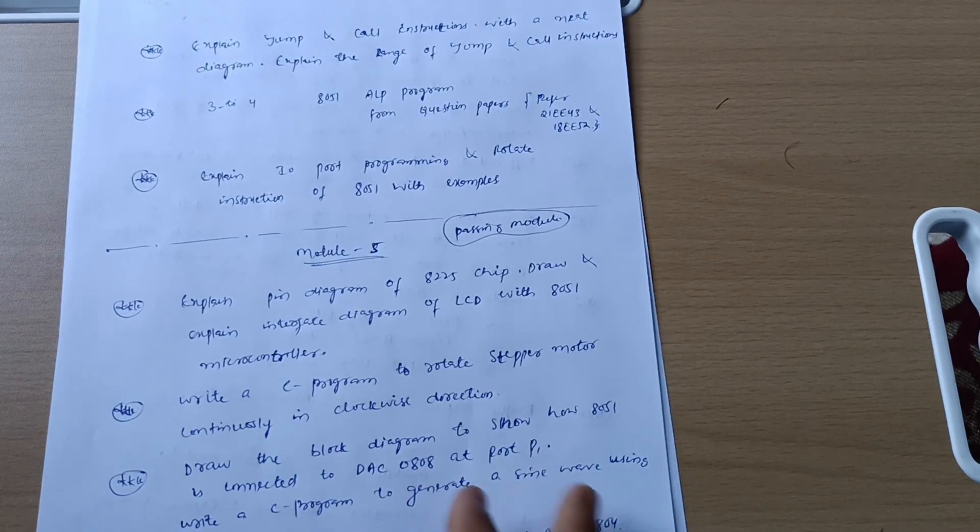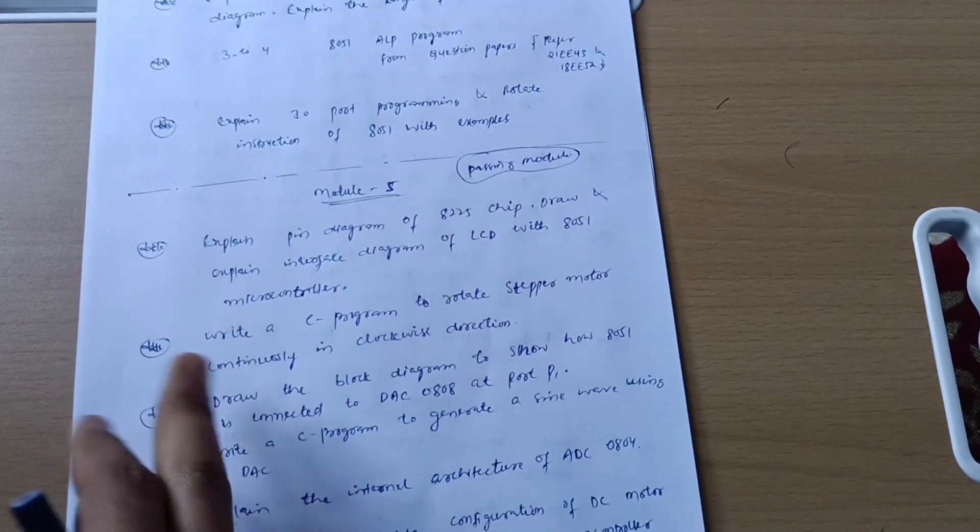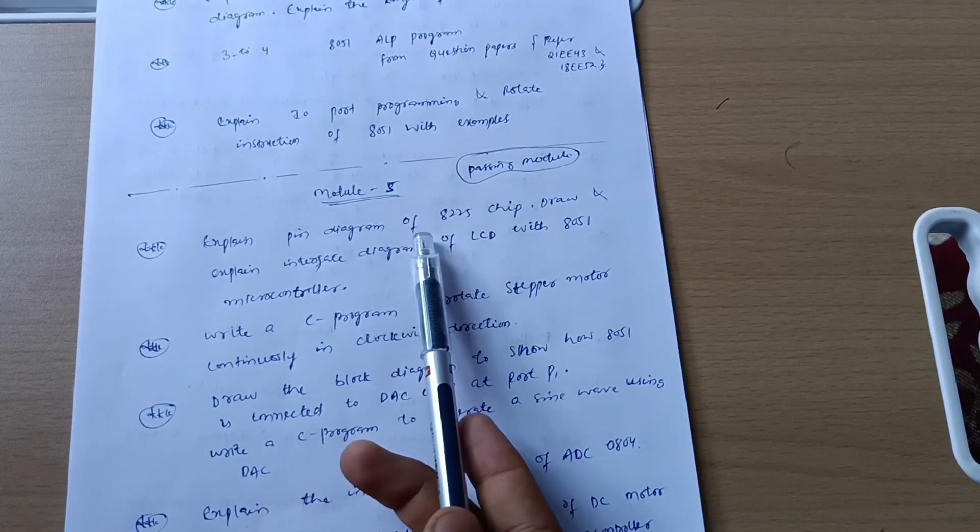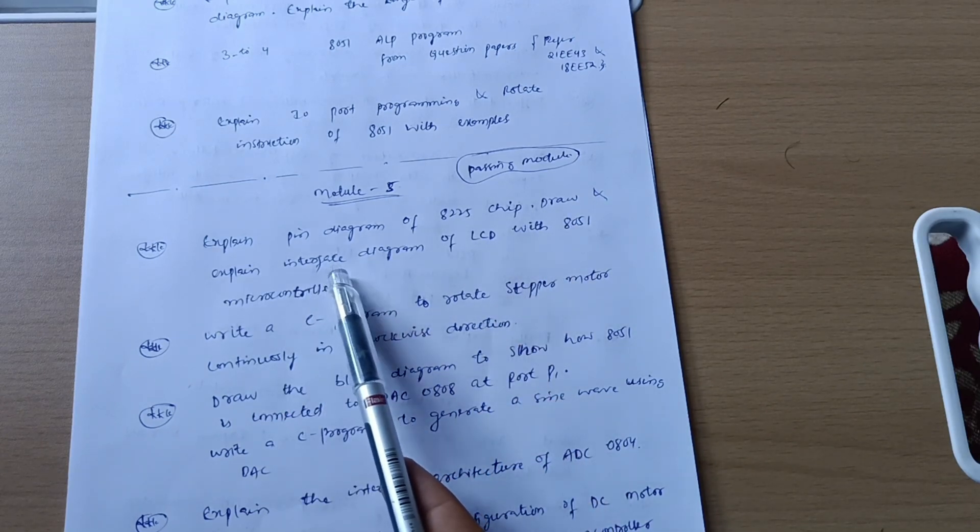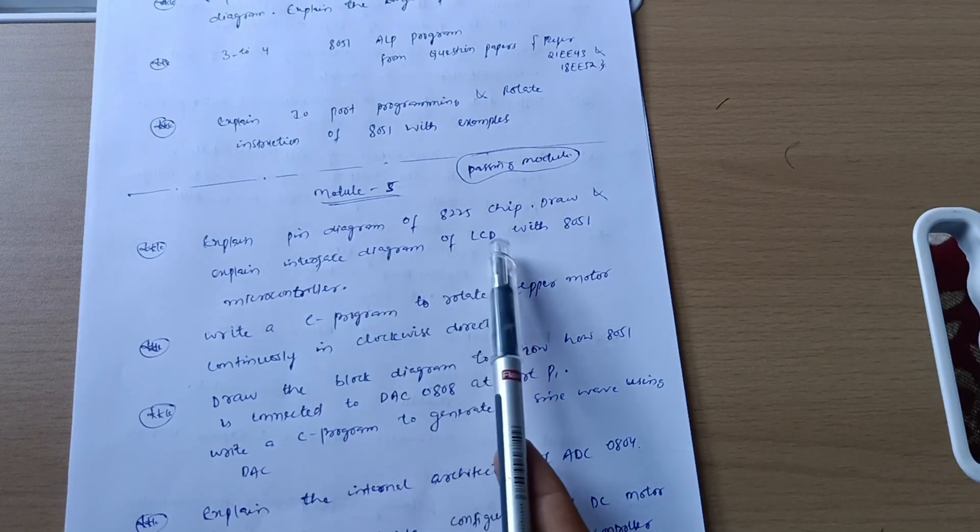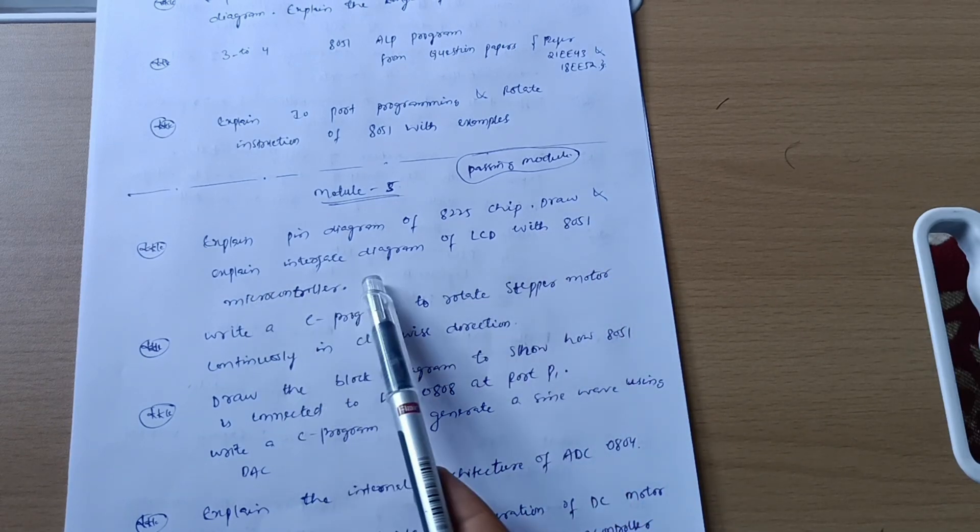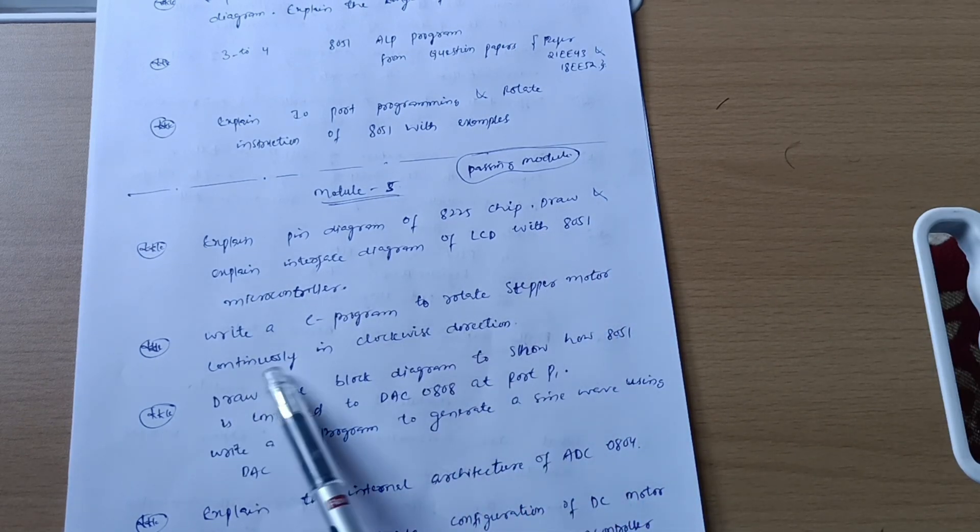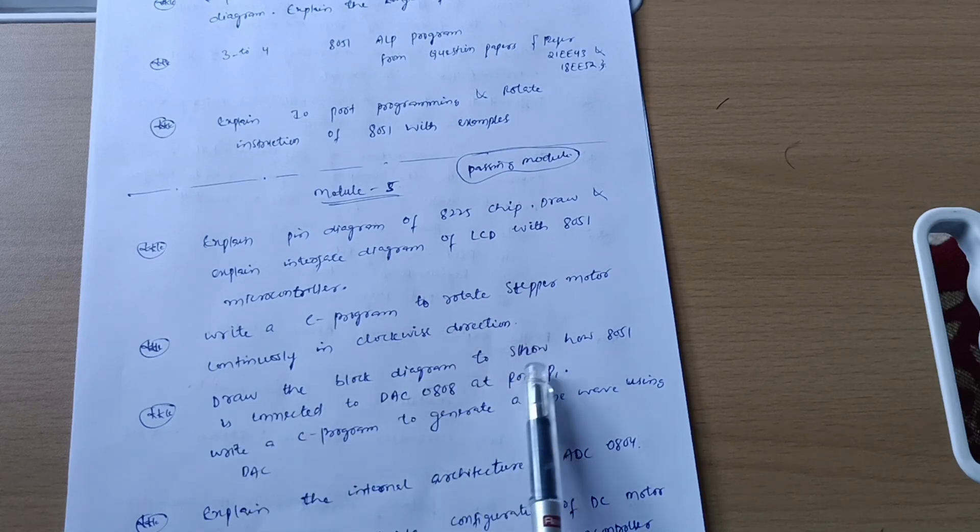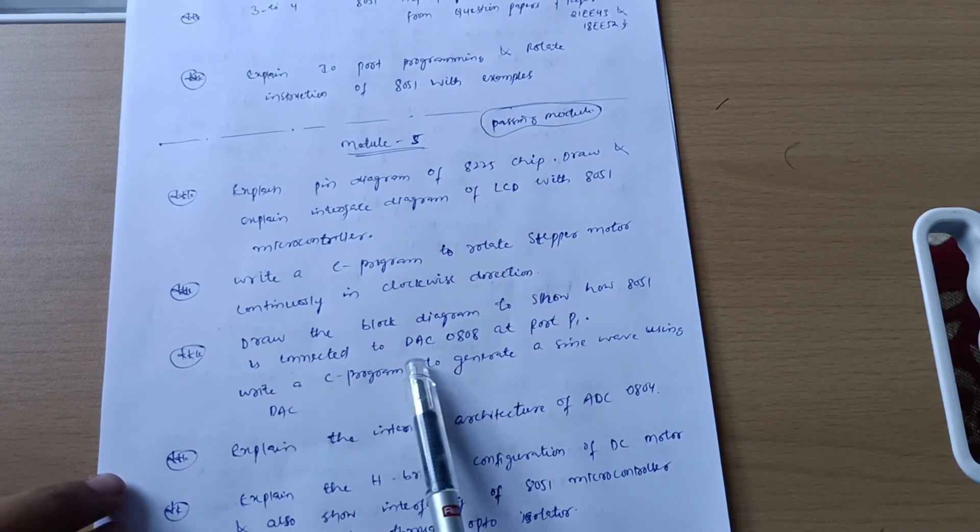Now last passing module we have here is Module 5. Explain pin diagram or sometimes block diagram of 8225 chip. Draw and explain interface diagram of LCD with 8051 microcontroller. Write a C program to rotate stepper motor continuously in clockwise direction.